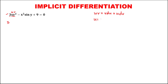So u equals x, and the derivative of u — the derivative of x — is 1. Then v is y squared. For dv, the derivative of v, the derivative of y squared is 2y times the derivative of y.